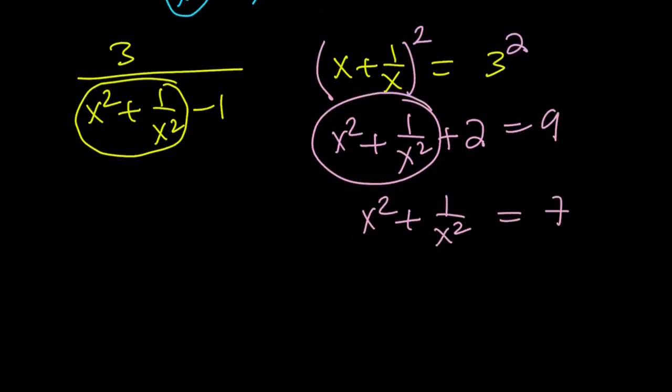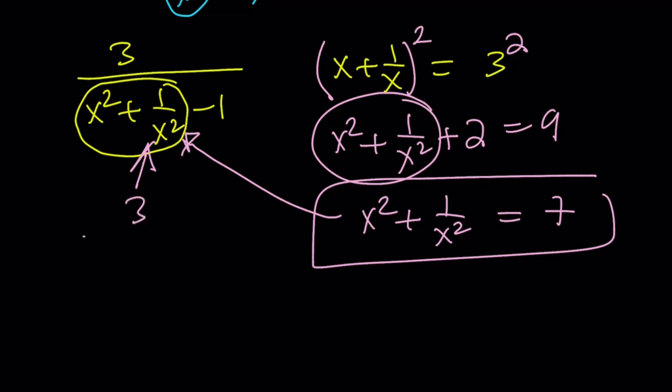But I can plug it in here, because I know now that this equals 7. No matter what the x value is, it's not going to matter. It's always going to be the same value. So I'm going to replace x squared plus 1 over x squared with 7. 7 minus 1 is 6. 3 over 6 equals 1 half. Thank you very much. Case closed.